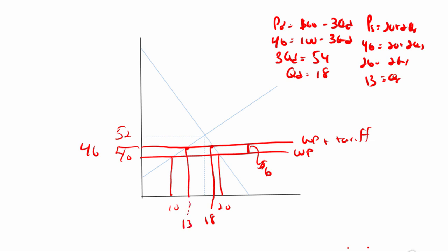So domestic production is now 13 units, consumers demand 18, and imports are 18 minus 13, which is 5 units. Imports declined by 5 units and producer surplus rises. The additional producer surplus due to the tariff is the area gained above the previous supply curve. Imports went from 10 units down to 5 units, and the answer is: imports decline by 5 and producer surplus rises.